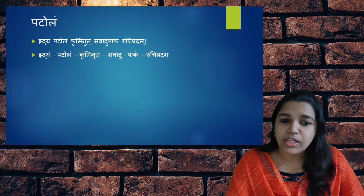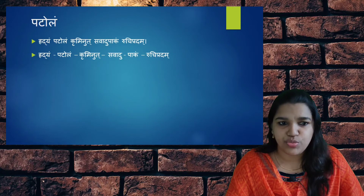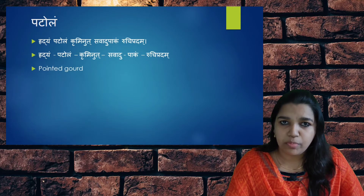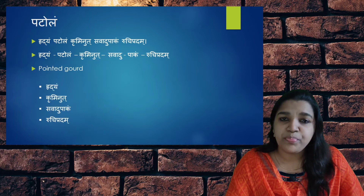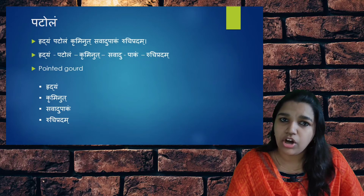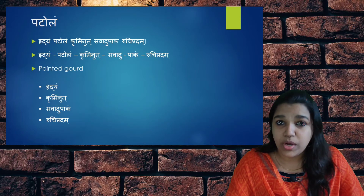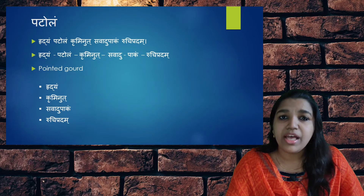Properties of Patola: Patola, the pointed gourd or snake gourd, is Hridya — it is good for the body — it is Kriminut, that is helps in removing Krimi or worm infestation, and Svadu Paka, there is Madhura Vipaka, and Ruchiprada — it enhances the taste.